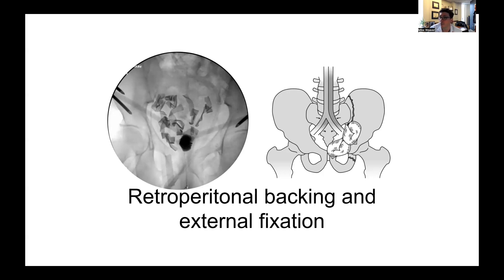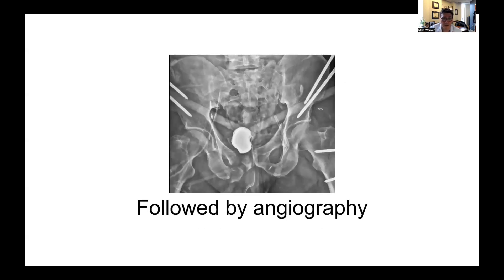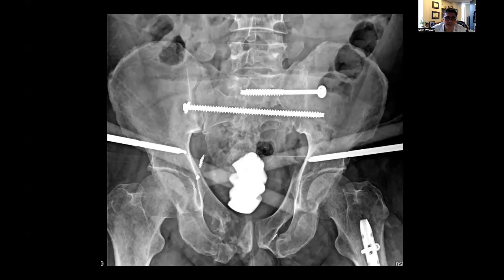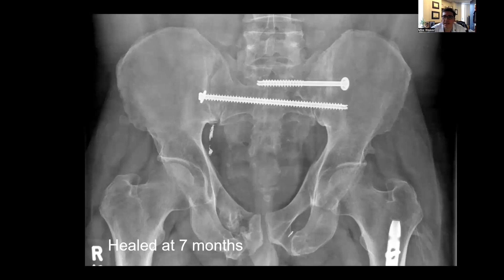He then went to angiography, and two days later we removed the packs. After he had been resuscitated, we brought him back for definitive fixation of the pelvic ring. Given the anterior injury, we elected to use an external fixator as the definitive fixation. We performed bilateral posterior pelvic ring fixation — sacroiliac fixation on the left side, transsacral fixation on the right — and then converted him to a handover frame with two pins in the front. This is what things looked like immediately following injury and definitive surgery, and then seven months later his fracture was healed and he was walking well.